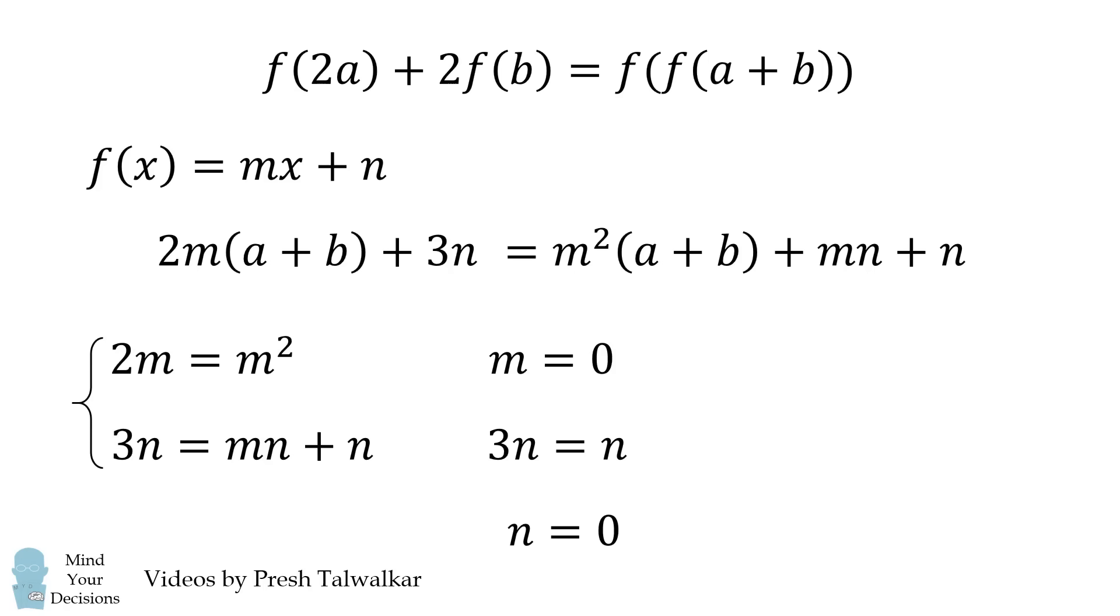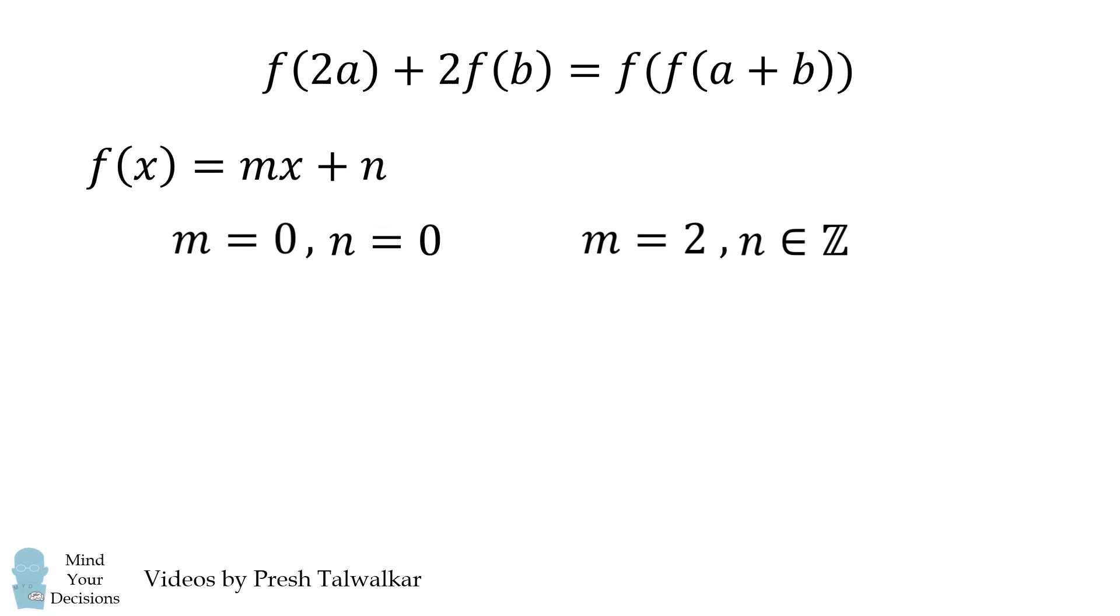The other possibility is that M is equal to 2. In this case we substitute in and get 3N is equal to N. So N can be any integer. And we now have two possibilities for our solution.